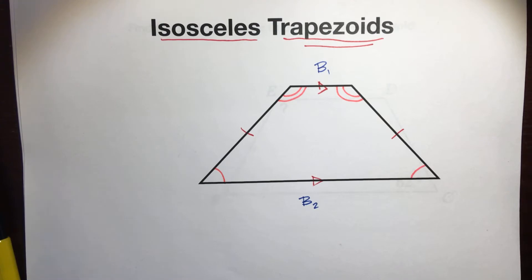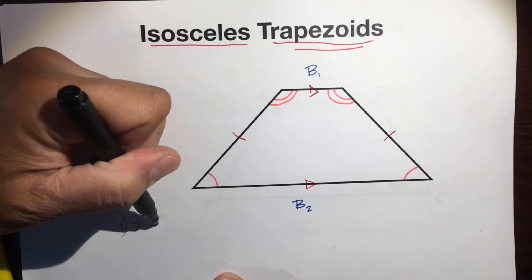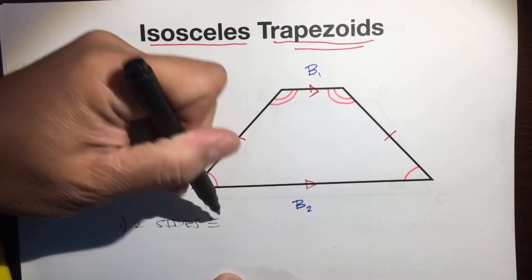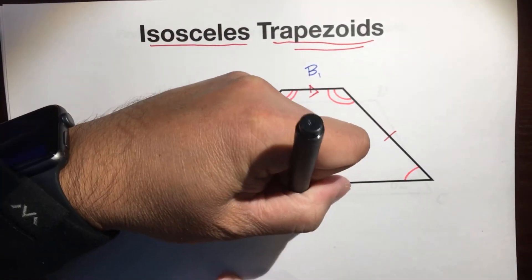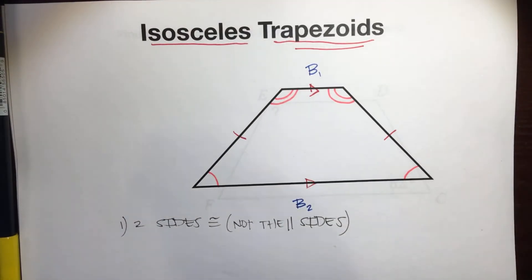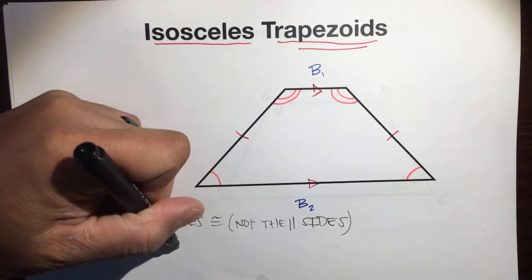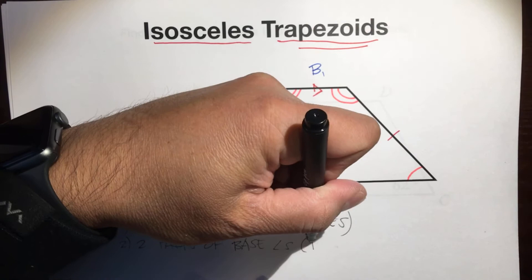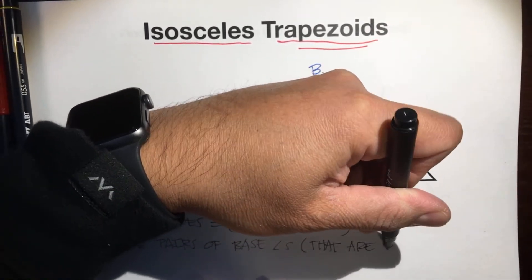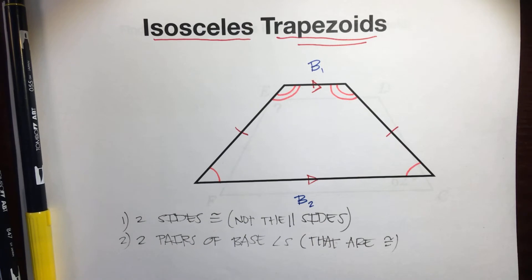Fact number one about isosceles trapezoids — the most basic fact — two sides are congruent, and those sides are not the parallel sides. These are the congruent sides, these are the parallel sides, and you can see it. And then the big one: two pairs of base angles that are congruent. So we have two sides that are congruent, not the parallel sides, and we have two pairs of base angles that are congruent.